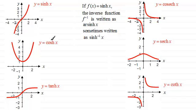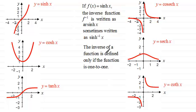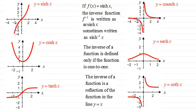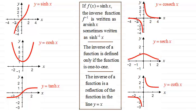So we'll talk about the inverse cosh of x and inverse tanh of x and so on. There are three key points to note: the inverse of a function is defined only if the function is one-to-one, and the inverse of a function is a reflection of the function in the line y equals x.